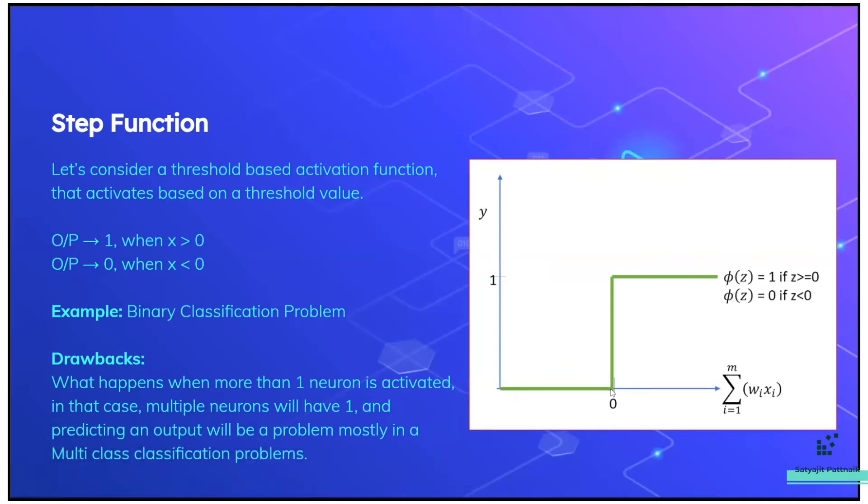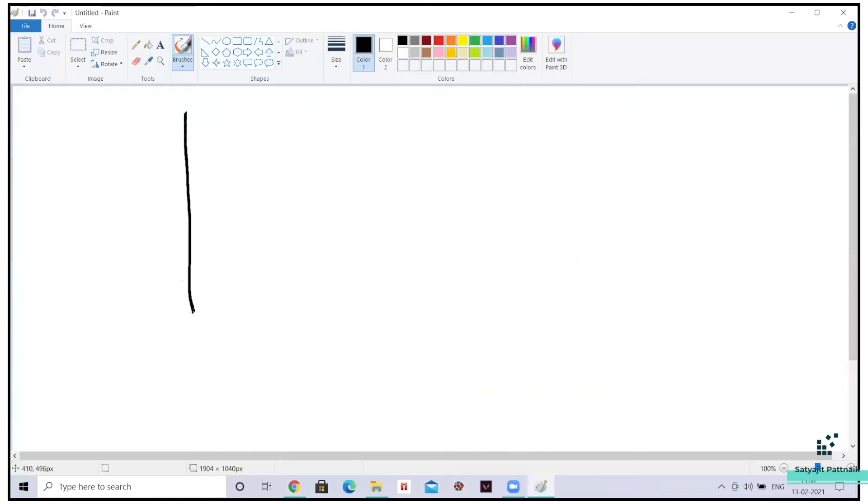when the x-axis is zero, then my y-axis is zero. When x is zero, my y is zero. But when the x is more than zero, that means greater than zero, then the y is one. So it looks like this. Very easy to interpret.